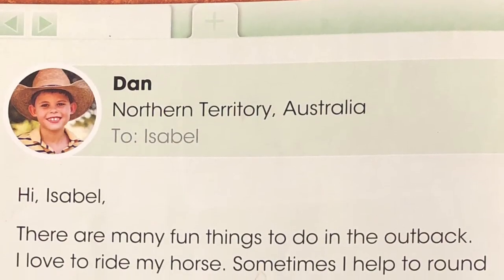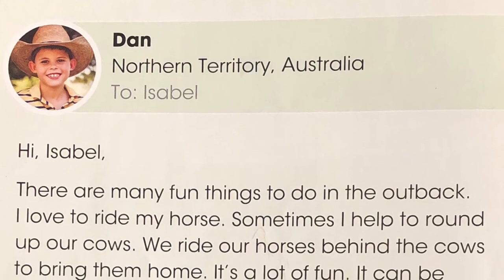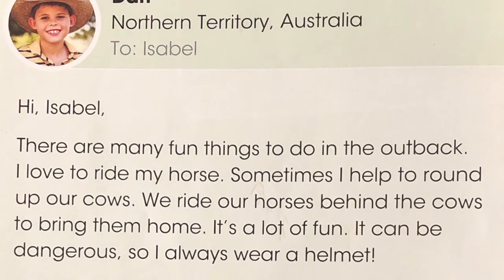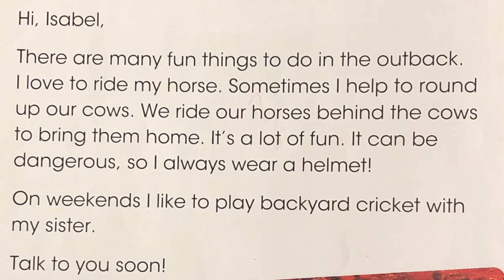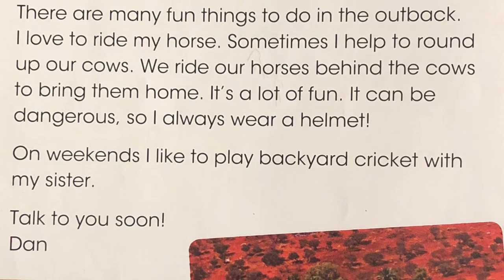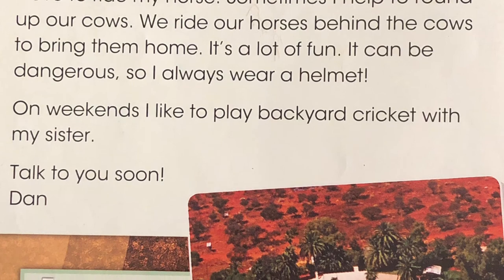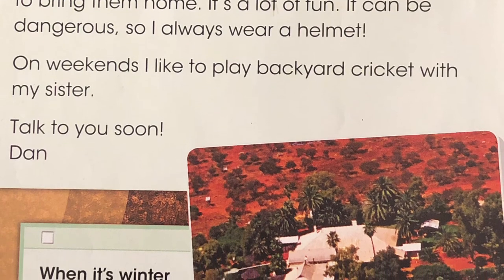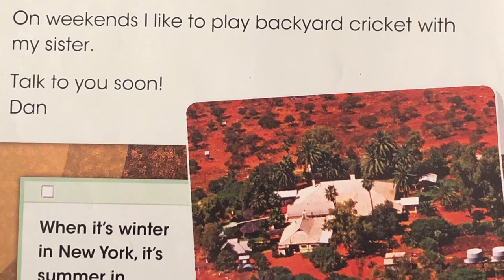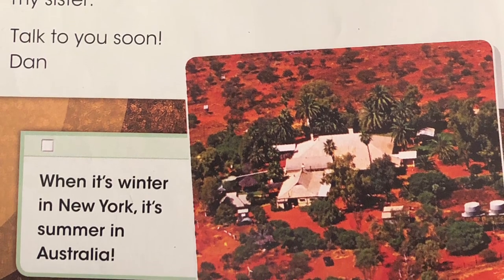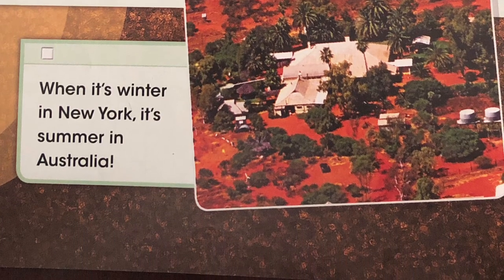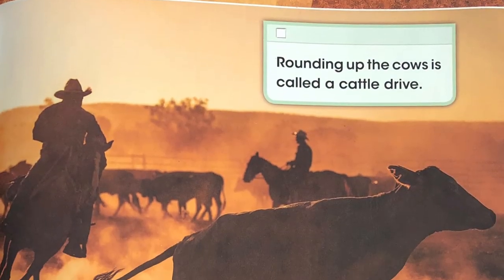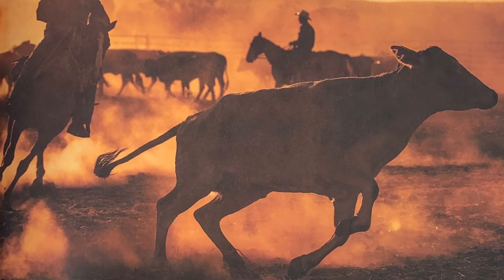Dan, Northern Territory, Australia. To Isabel. Hi, Isabel. There are many fun things to do in the Outback. I love to ride my horse. Sometimes I help to round up our cows. We ride our horses behind the cows to bring them home. It's a lot of fun, but it can be dangerous, so I always wear a helmet. On weekends, I like to play backyard cricket with my sister. Talk to you soon. Dan. When it's winter in New York, it's summer in Australia. Rounding up the cows is called a cattle drive. You need a good bat to play cricket.